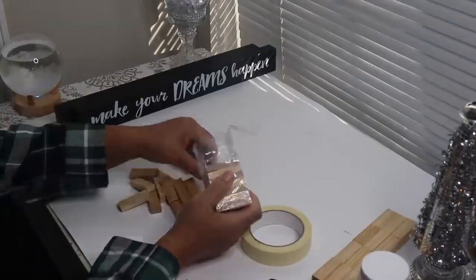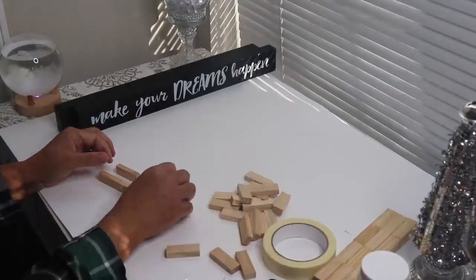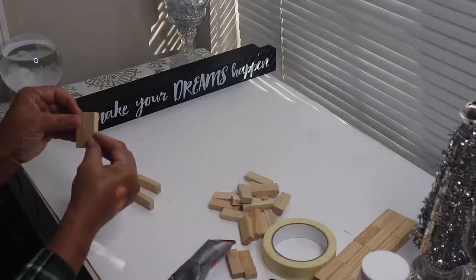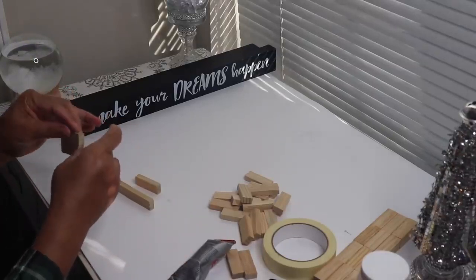Now I'll show you how to use the tower blocks to build the two pieces that you'll need to make the tray. I'm using Gorilla Glue to glue the blocks together. If you don't have it, wood glue will work just as well.